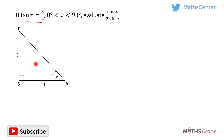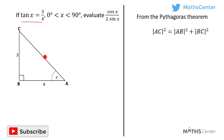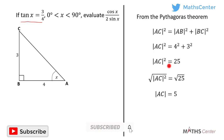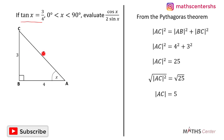This is a right angle triangle, so we can use the Pythagorean theorem to find side AC. AC squared is equal to AB squared plus BC squared, which gives us 4 squared plus 3 squared, equal to 25. Taking the square root of both sides, AC is equal to the square root of 25, which is 5.